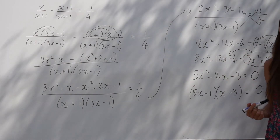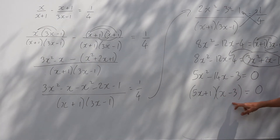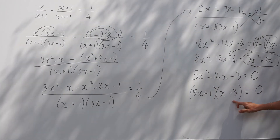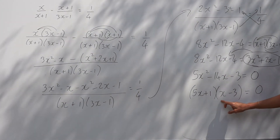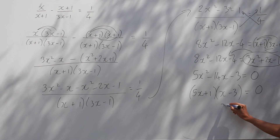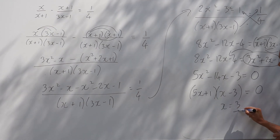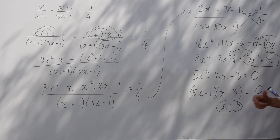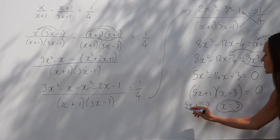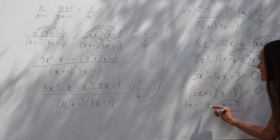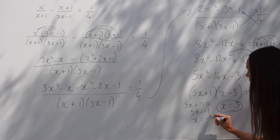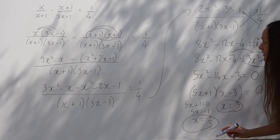Now we find the two x values. Either the bracket x minus 3 equals 0, so x equals 3; or the bracket 5x plus 1 equals 0. Solving 5x plus 1 equals 0: subtract 1 and then divide by 5, giving x equals negative one fifth. So the two solutions are x equals 3 and x equals negative one fifth.